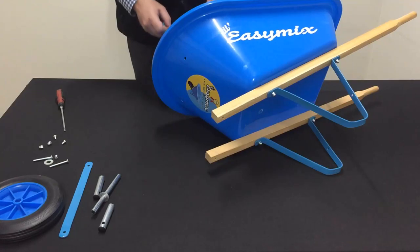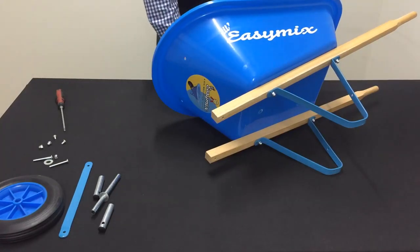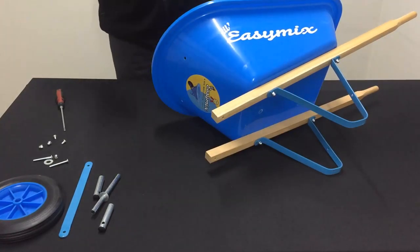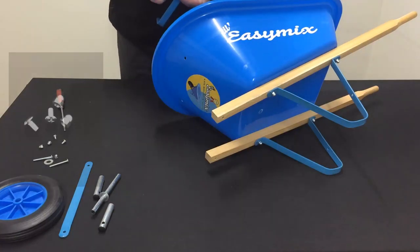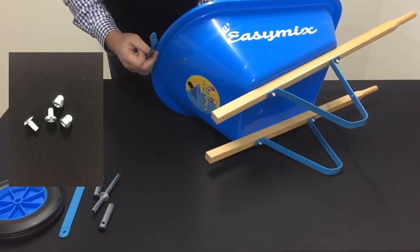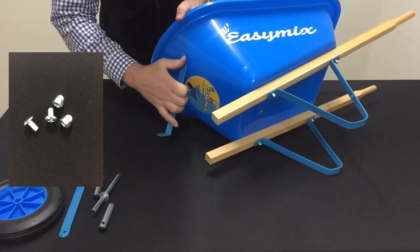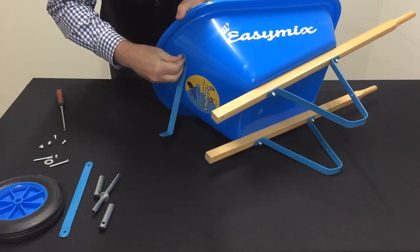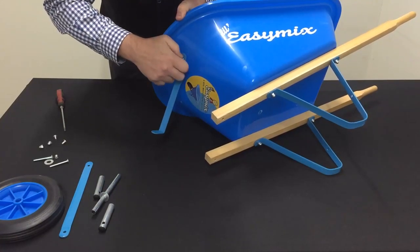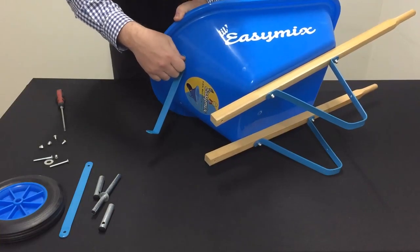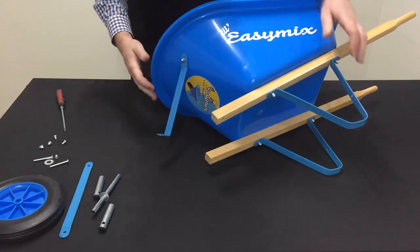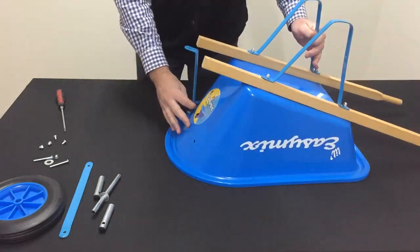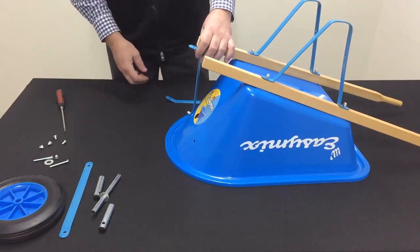The next step is to attach the upright supports. So we take one of our short nuts and dome head bolts, as you can see there, fix that through the tray, attach the support and just keep it finger tight for now. Do the same on the other side and we are ready to attach the wheel.